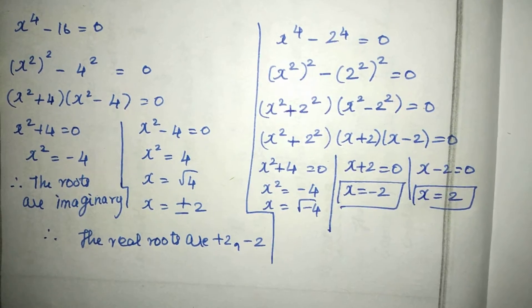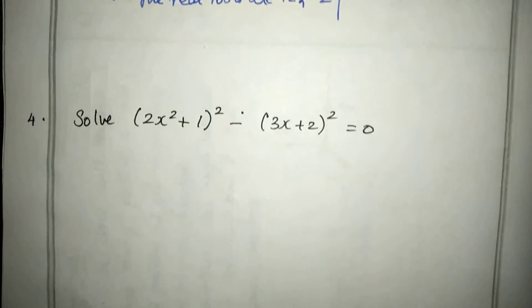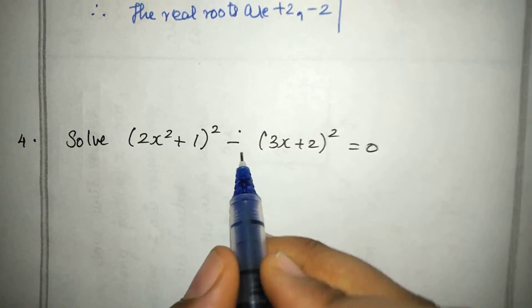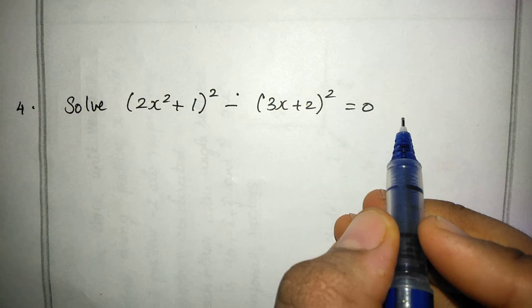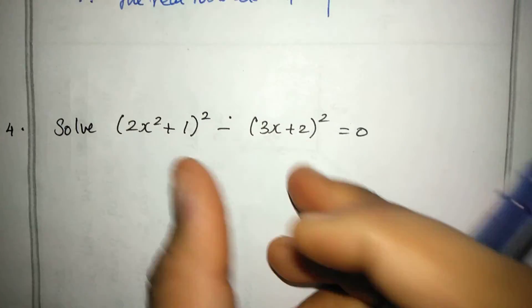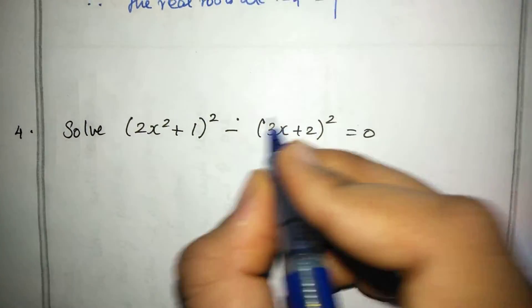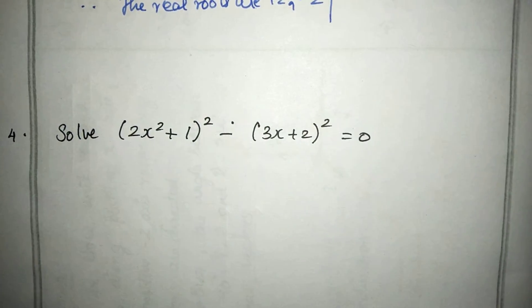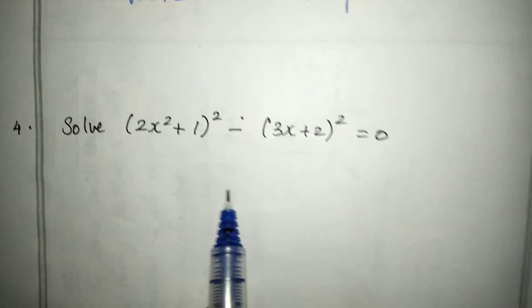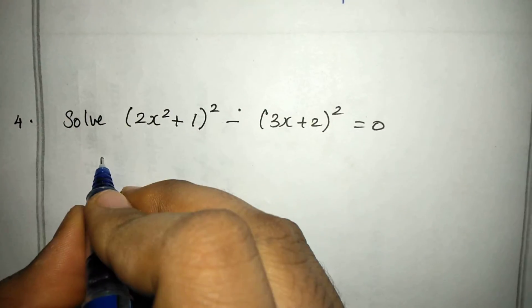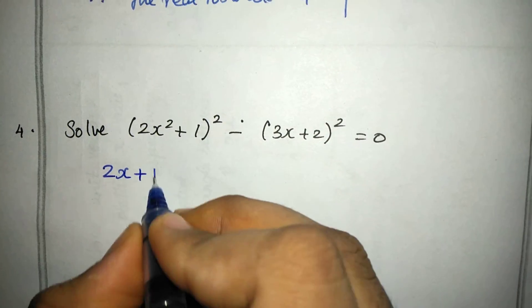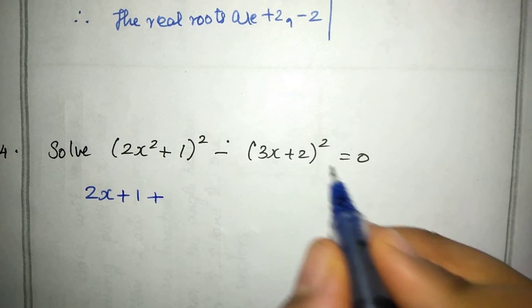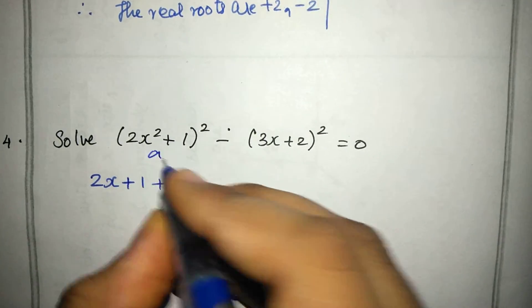Now let's see the 4th sum: Solve (2x² + 1)² − (3x + 2)² = 0. Here (2x² + 1) is the total 'a' term and (3x + 2) is the total 'b' term. This is in the a² minus b² format, which equals (a + b)(a − b) = 0.